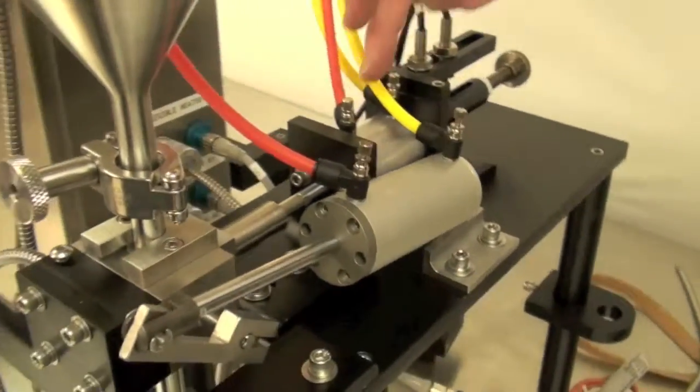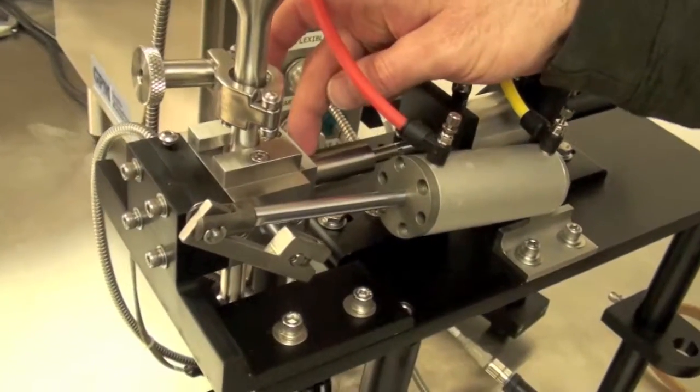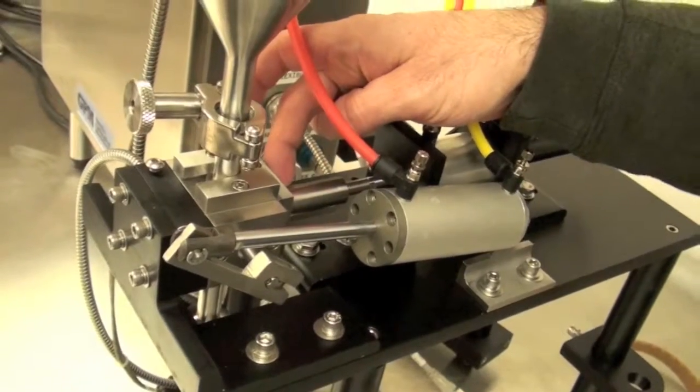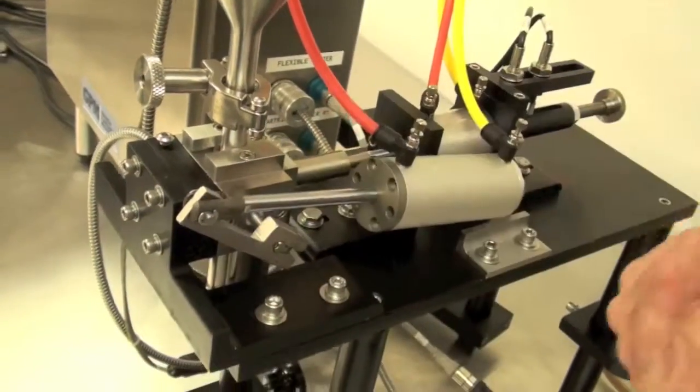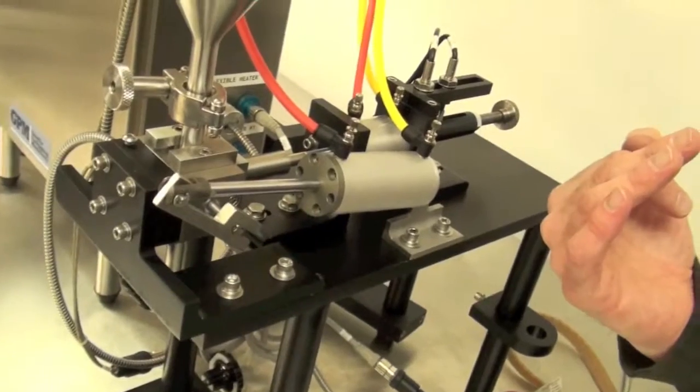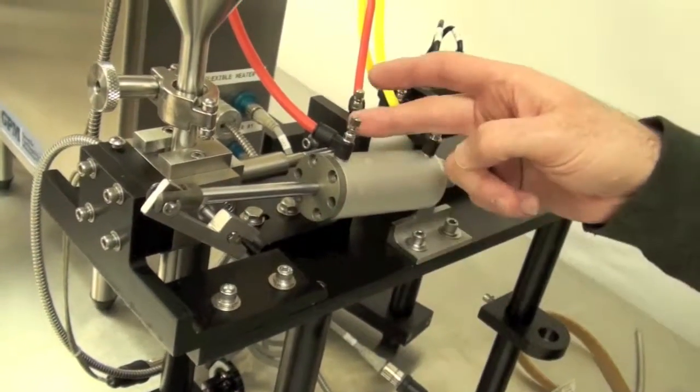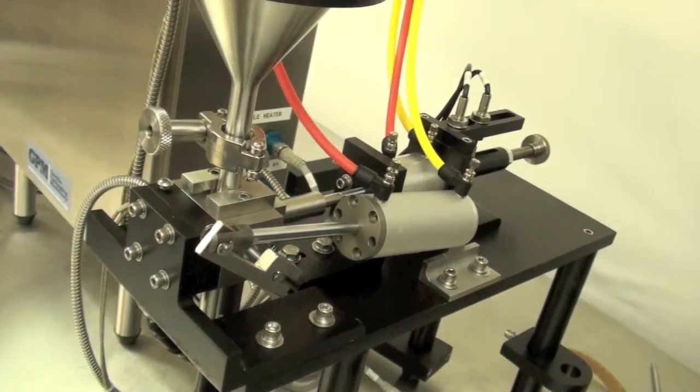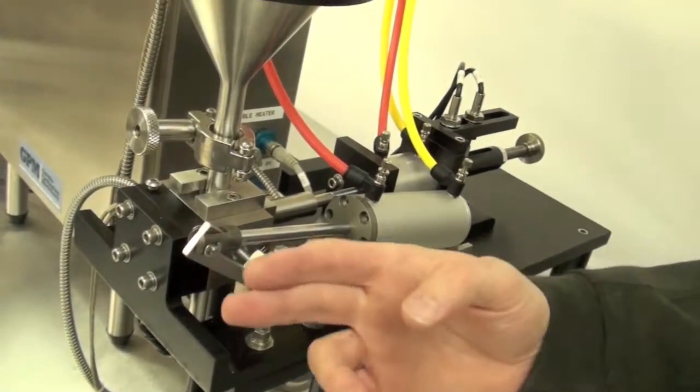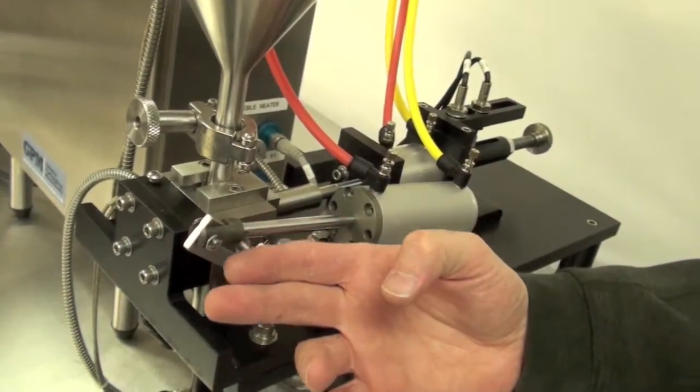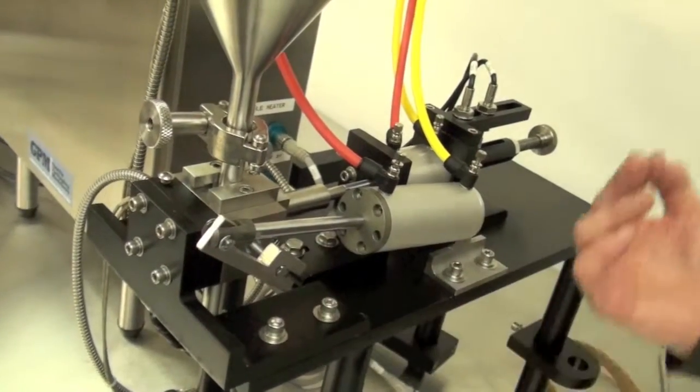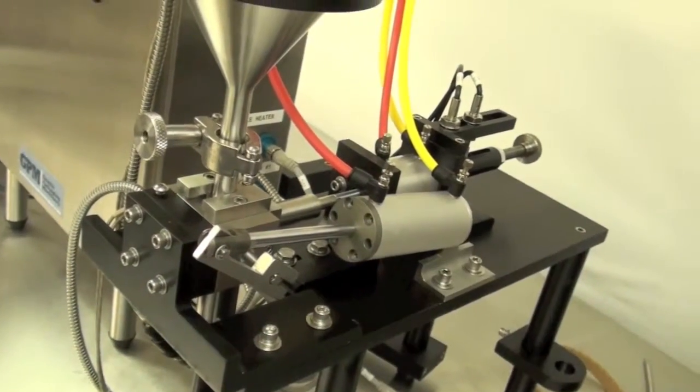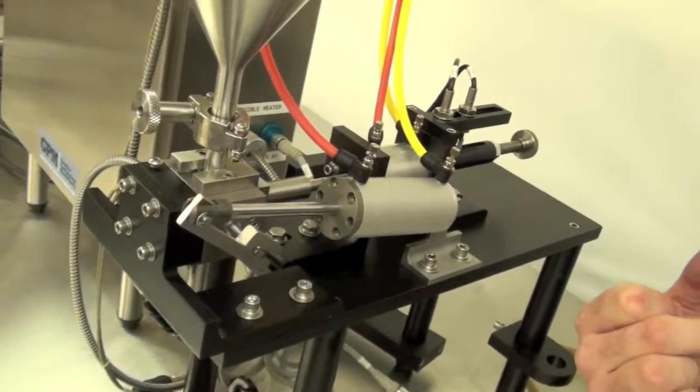So what that indicates is once this main piston goes forward, 0.3 seconds later the rotary piston closes back off. Now, in some cases where your product is thicker and has more back pressure, you might want to have this dwell time a little bit longer to allow for full dispensing of the product before closing the valve.